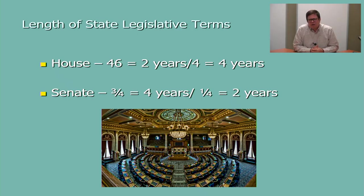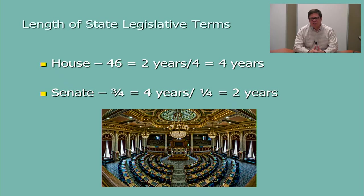Finally, we look at the length of legislative terms. There was a feeling at the turn of the revolutionary era that once you got away from one-year terms of office, tyranny begins. We've made terms a little longer. In state legislatures, 46 states have two-year house terms — the same as the U.S. House of Representatives — and four have four-year terms. In the Senate, 75% of all state senates have four-year terms, with a quarter having two-year terms. In Pennsylvania, the 203 members of the state house are up for re-election every two years, while the 50 state senators serve staggered four-year terms, with 25 up in 2016 and the other 25 in 2018.